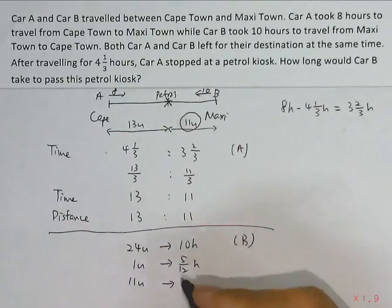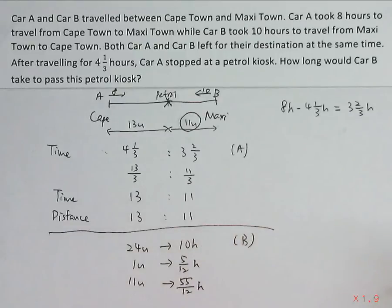Here we will have 55/12 hours. And this can be simplified into mixed fraction. And that will give us 4 and 7/12 hours.